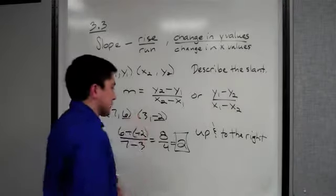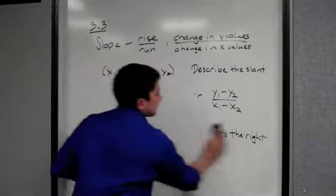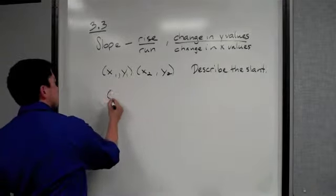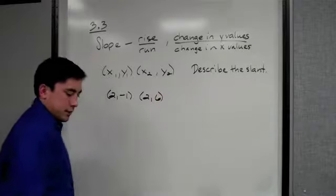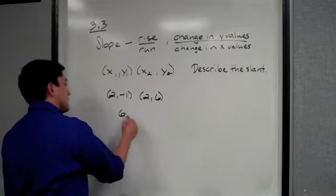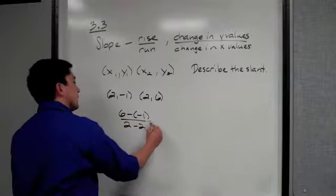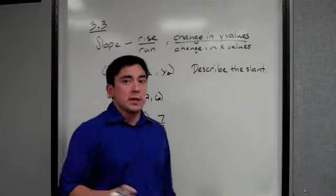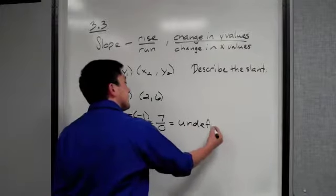There's two other types of slopes that we're going to see besides positive and negative. If I give you these coordinates (2, -1) and (2, 6), again let's set this up: y2 minus y1, so 6 minus -1 over 2 minus 2. You'll notice this ends up being 7 over 0.